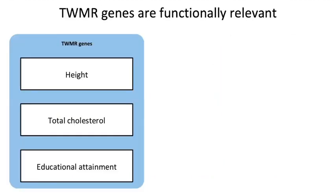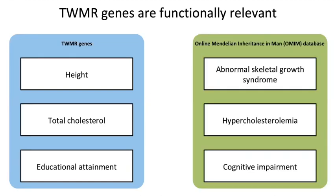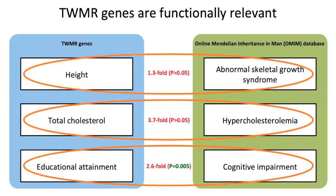Finally, to check if our TWMR genes were functionally relevant, we overlapped the list of associated genes with genes from OMIM associated with abnormal skeletal growth syndrome, hypercholesterolemia, and cognitive impairment, comparing against our TWMR-associated genes for height, total cholesterol, and educational attainment respectively. While we found only a trend of enrichment for height and total cholesterol, we found a significant enrichment for educational attainment, providing additional supporting evidence for our TWMR genes.